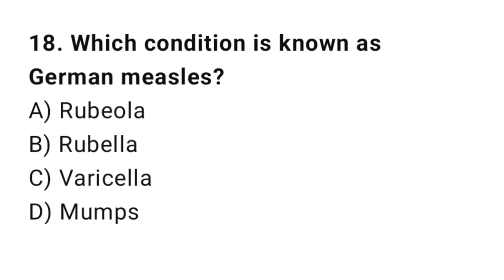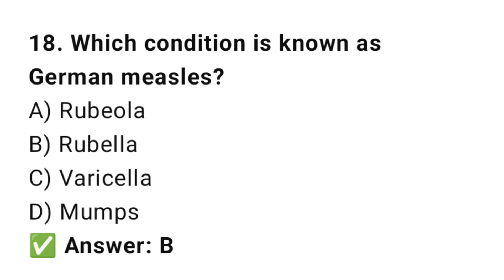Q18: Which condition is known as German measles? The right answer is B, rubella. Rubella is also called German measles; it causes a mild rash and fever.